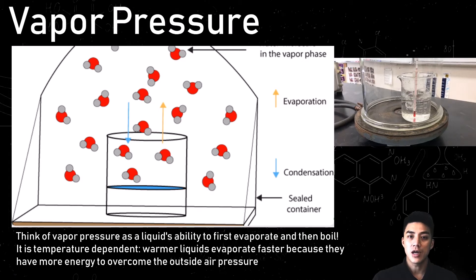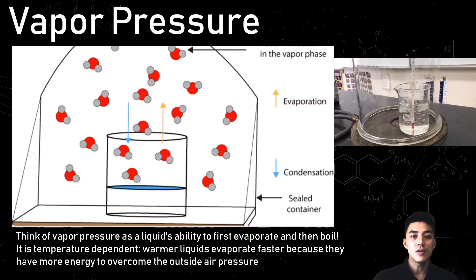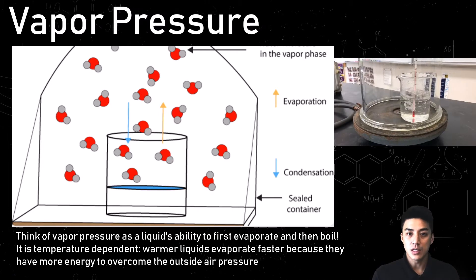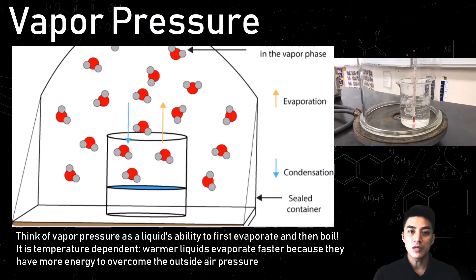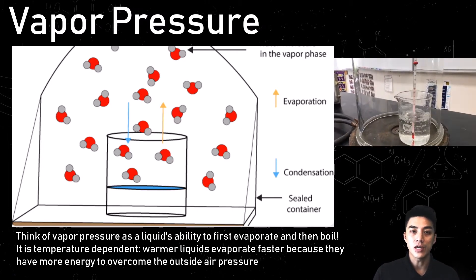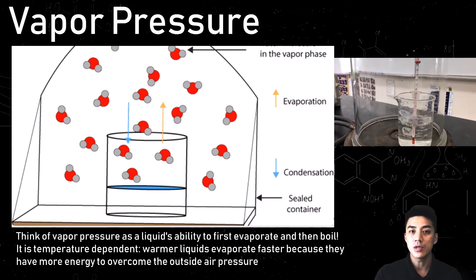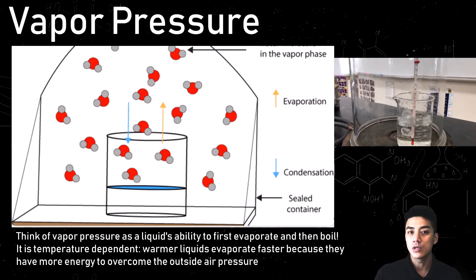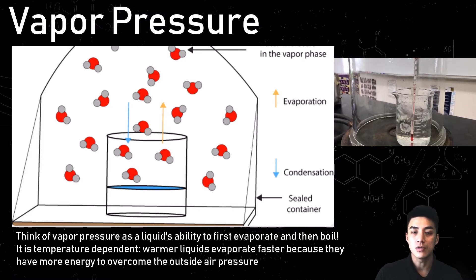Think of vapor pressure as a liquid's ability to first evaporate and then boil. It is a liquid's ability to push upwards and overcome the effects of air pressure, which is holding it down. It is also temperature dependent, so that means warmer liquids are able to evaporate and eventually boil faster than colder liquids.